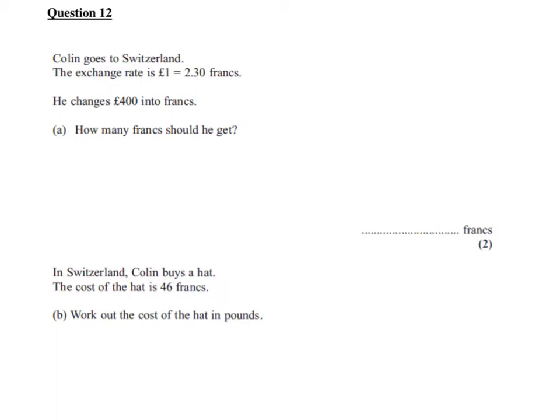That's our first part. We've got £400, and for every pound we're going to get 2.3 francs. So we simply multiply 400 times 2.3, and when we multiply that through, the answer is 920 francs.